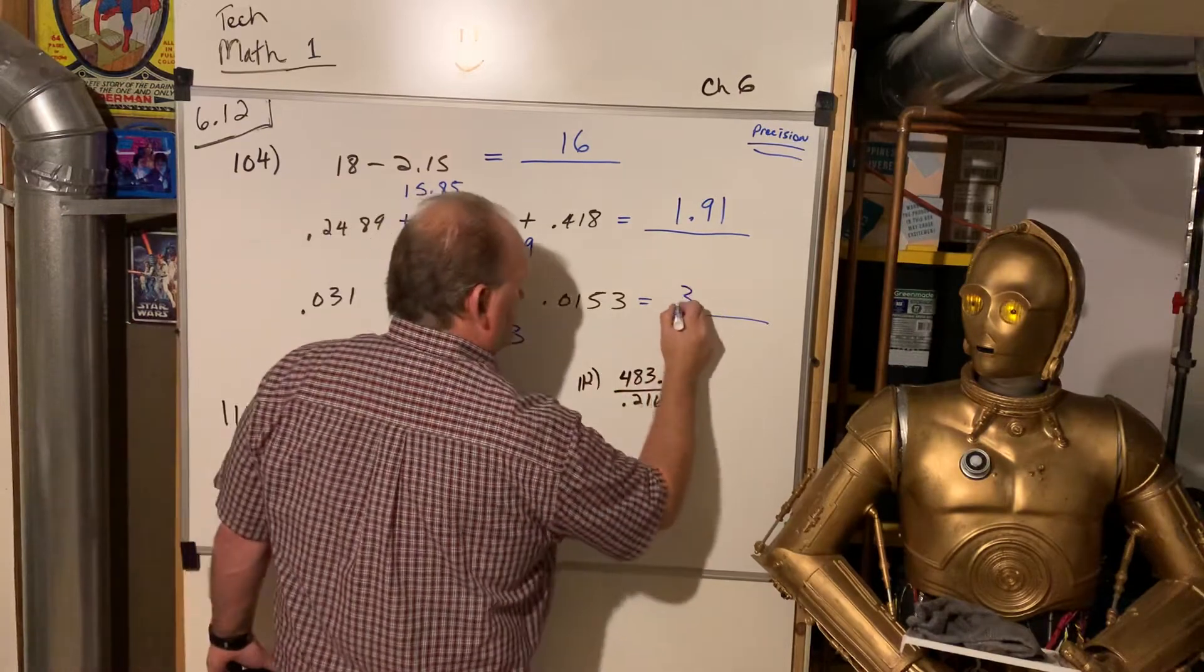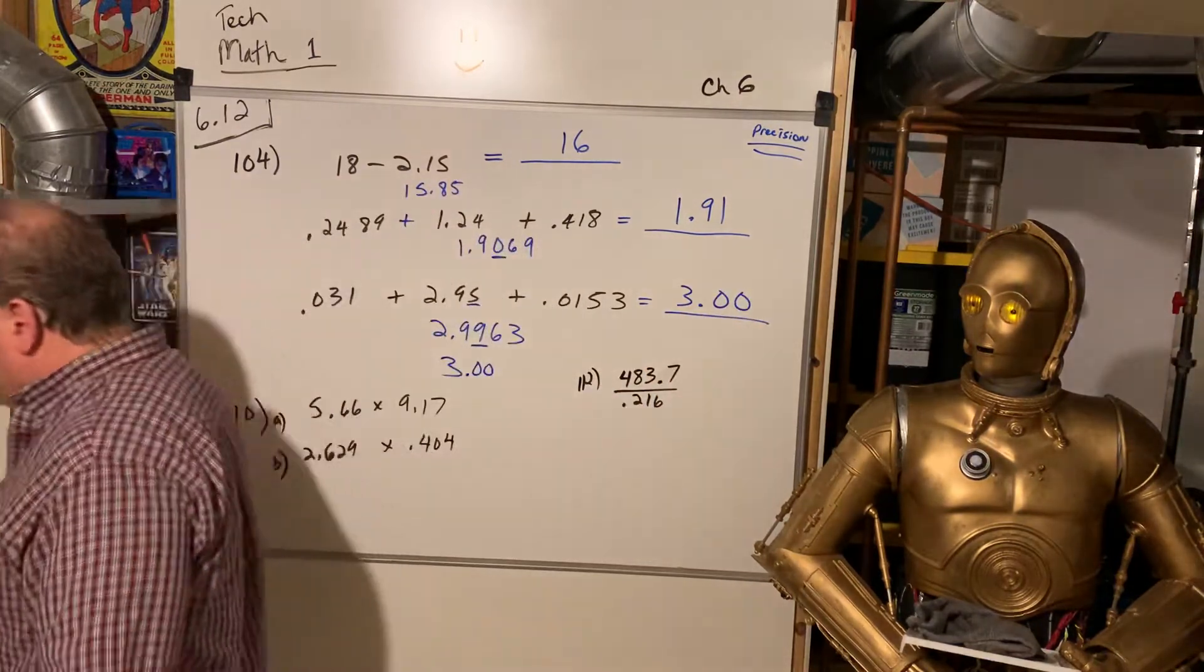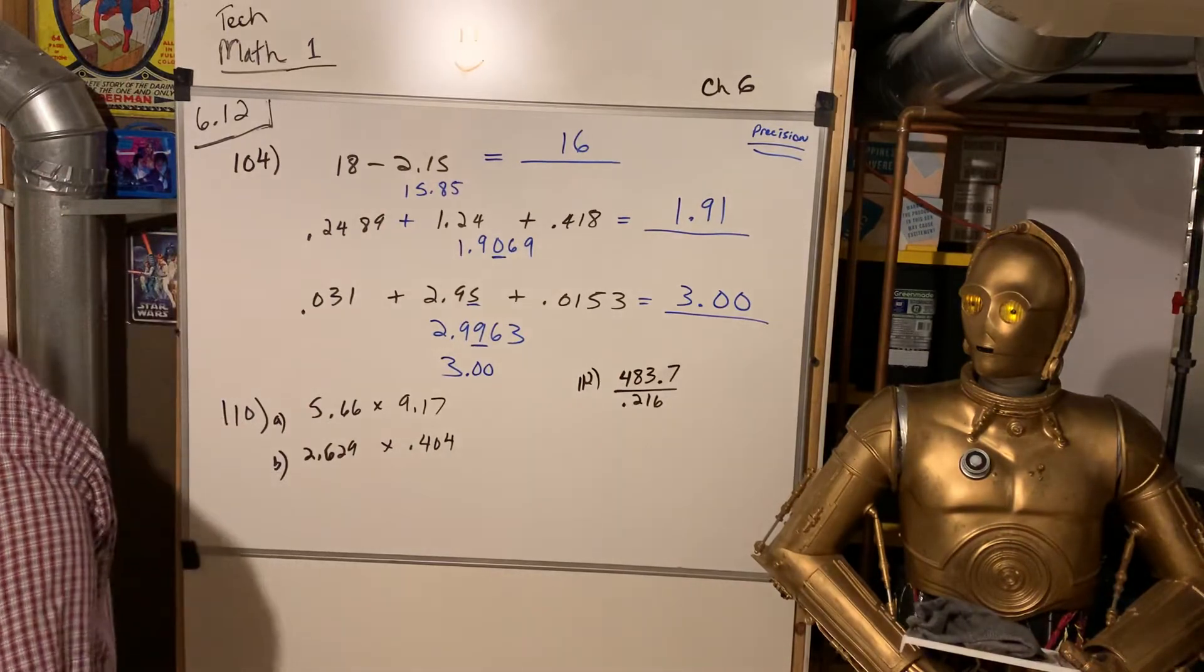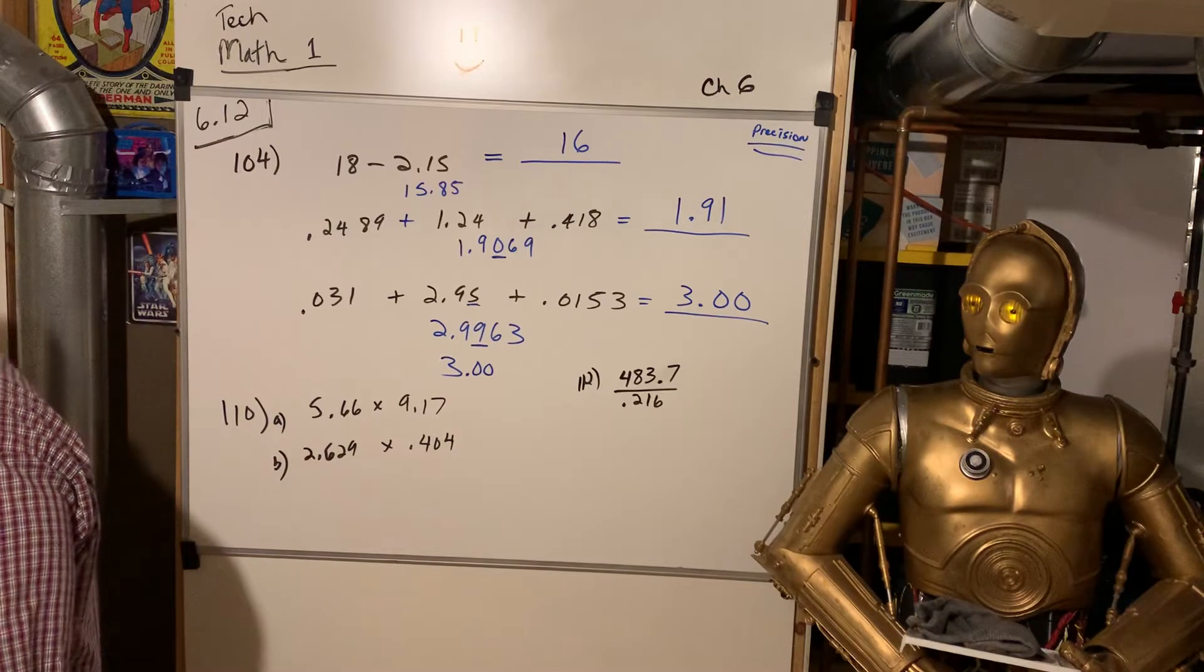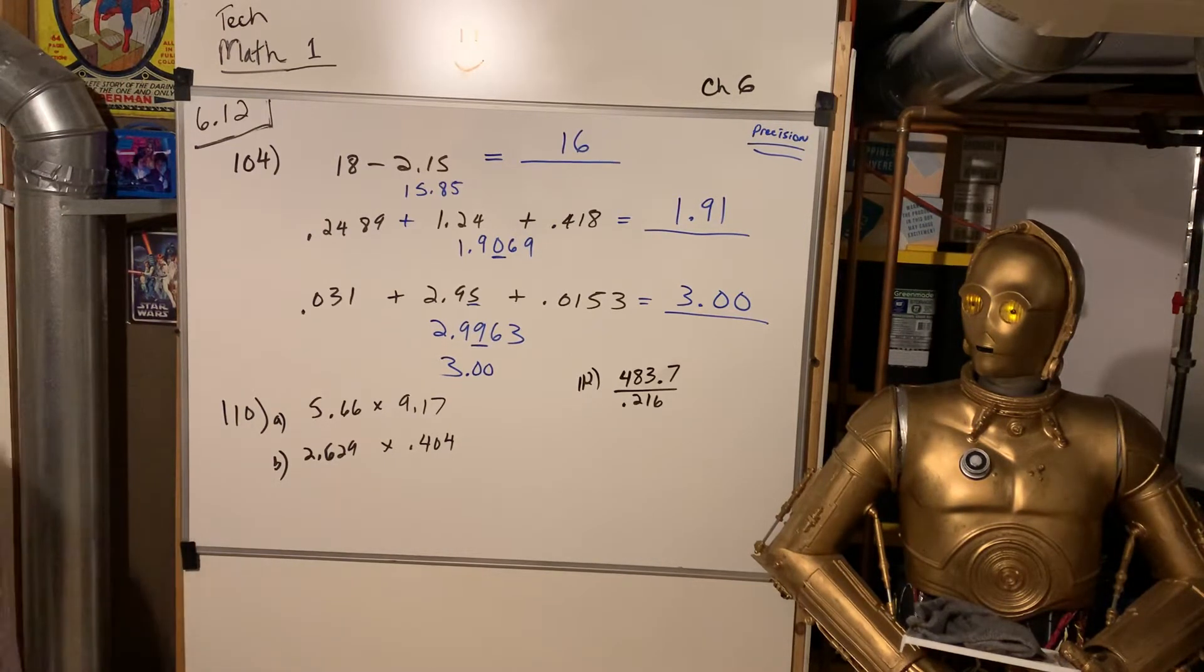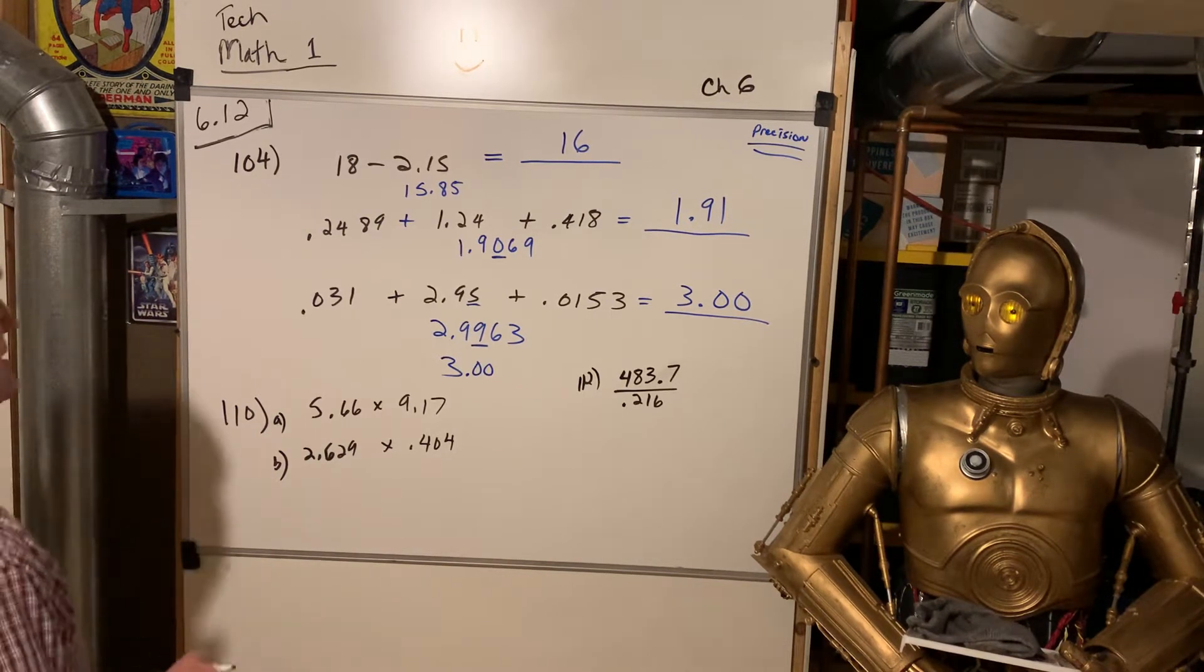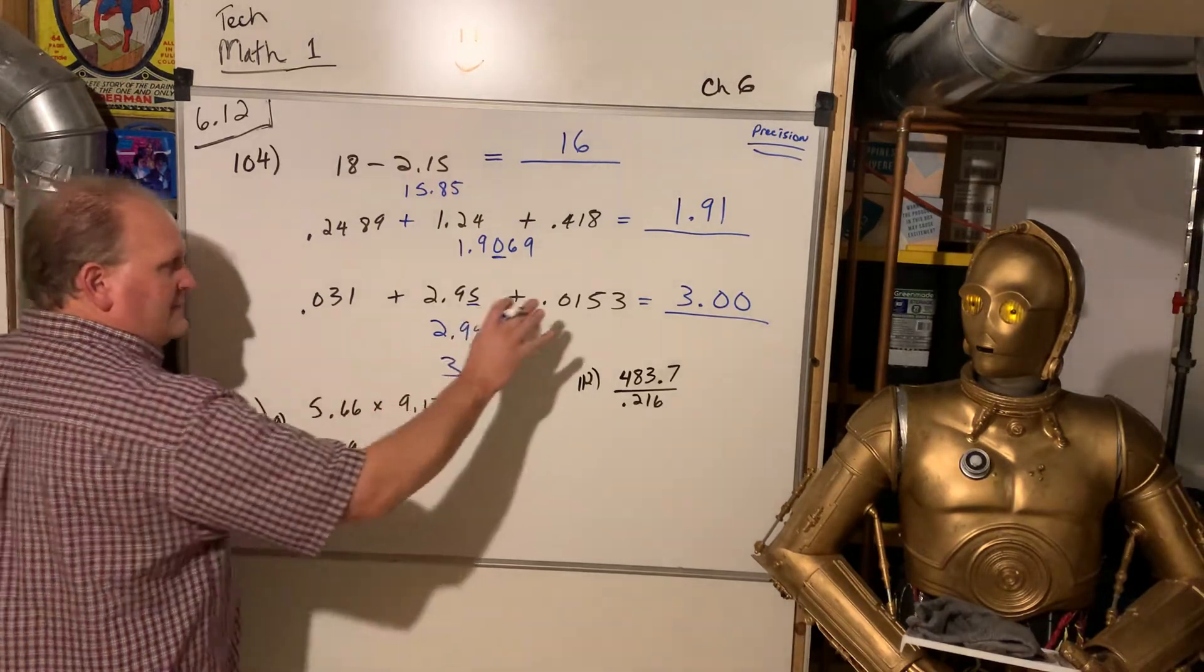But, I want to show precision to 100th place. So, I'll write it like this, 3.00. And what that signifies is that I actually went to 100th place. I didn't just use a whole number, all right? So, 16 and 1.91 and 3.00.